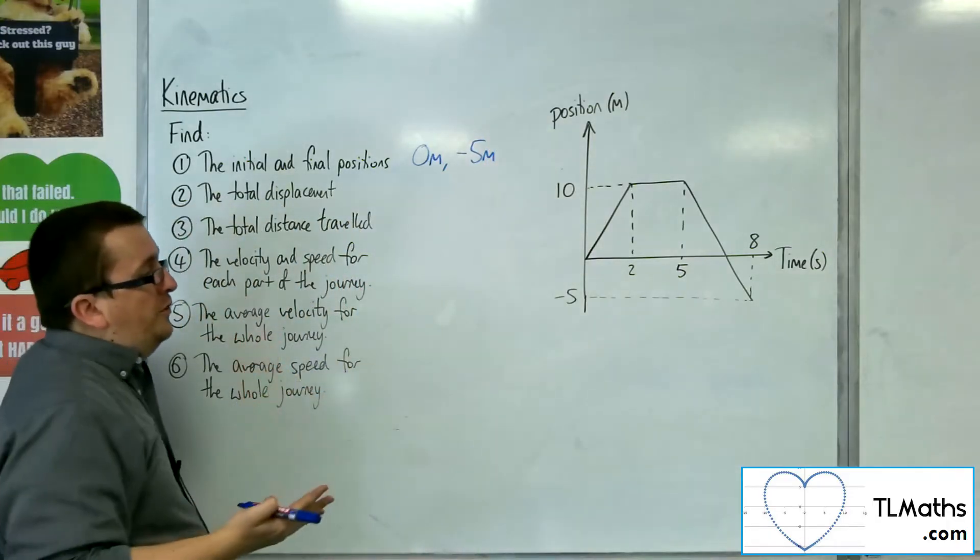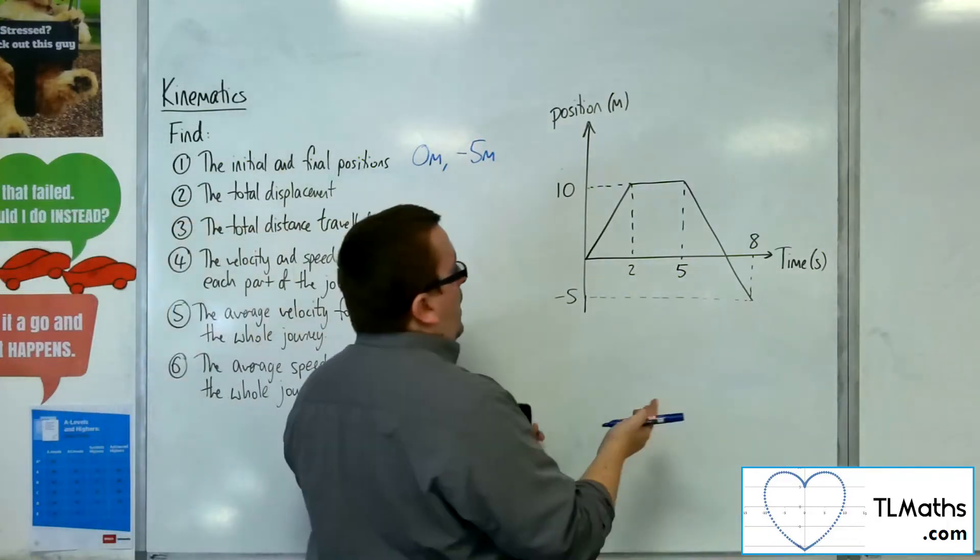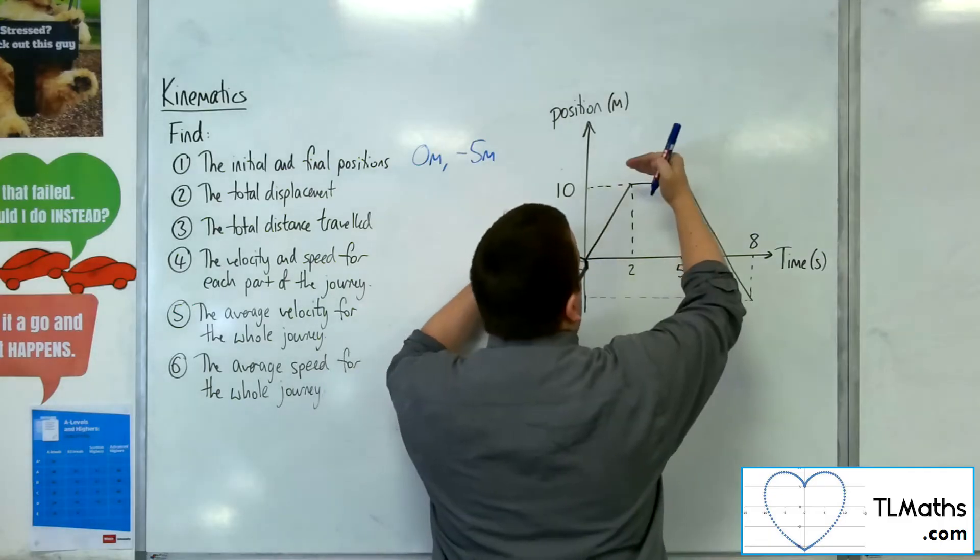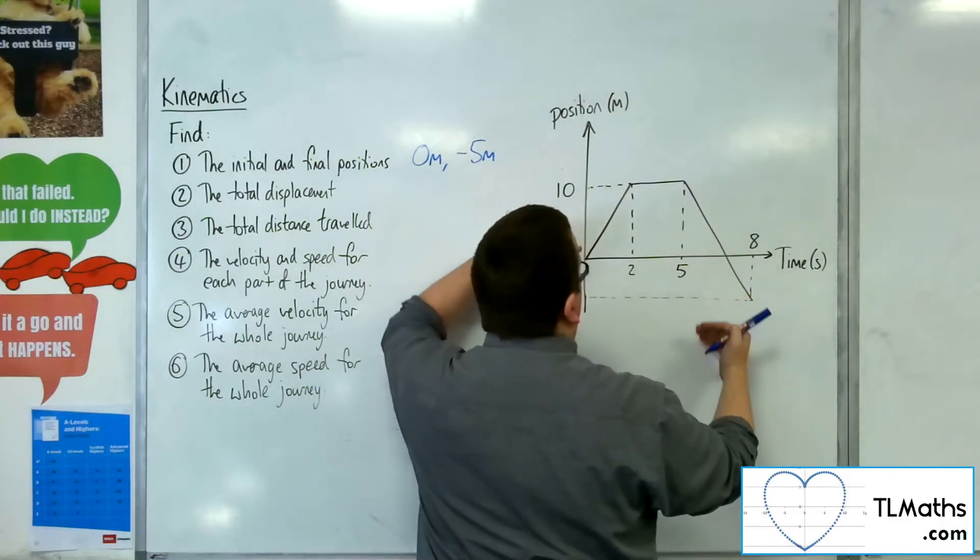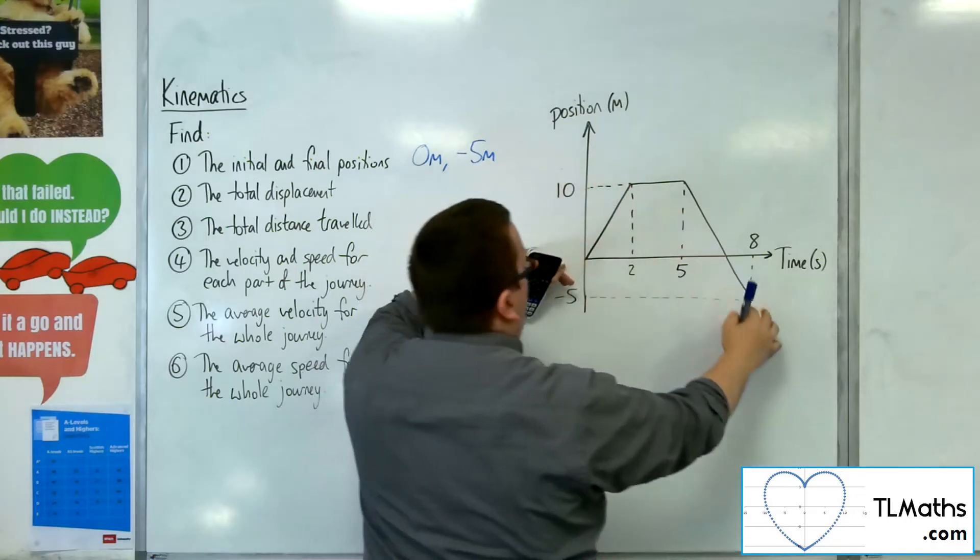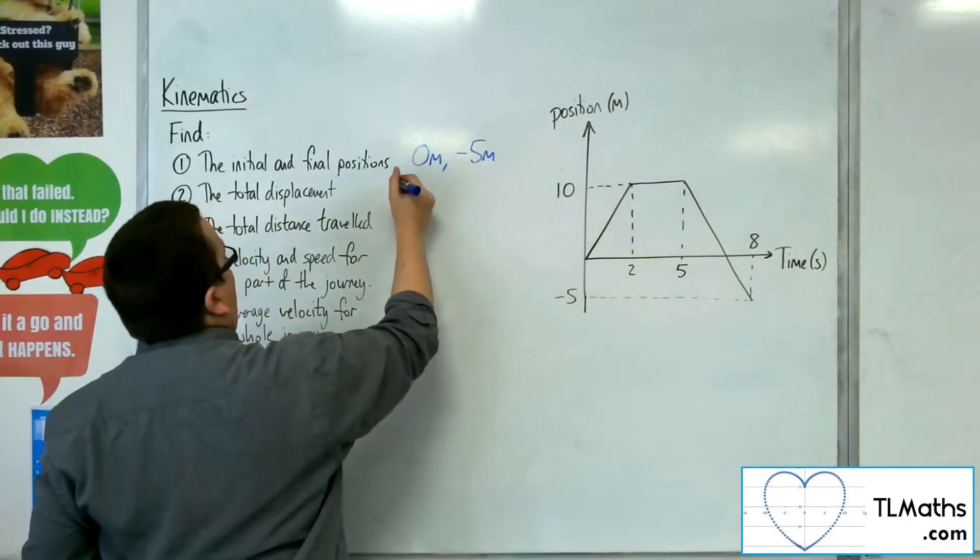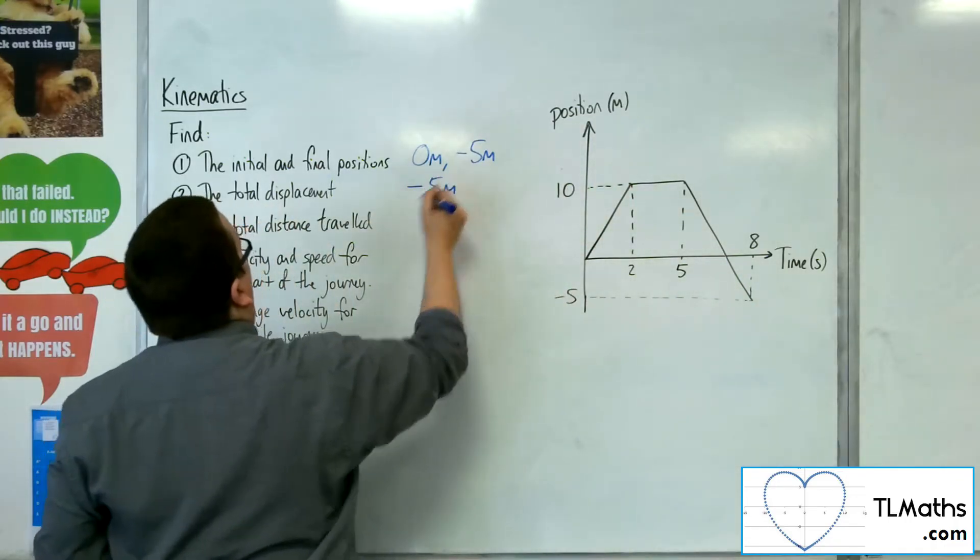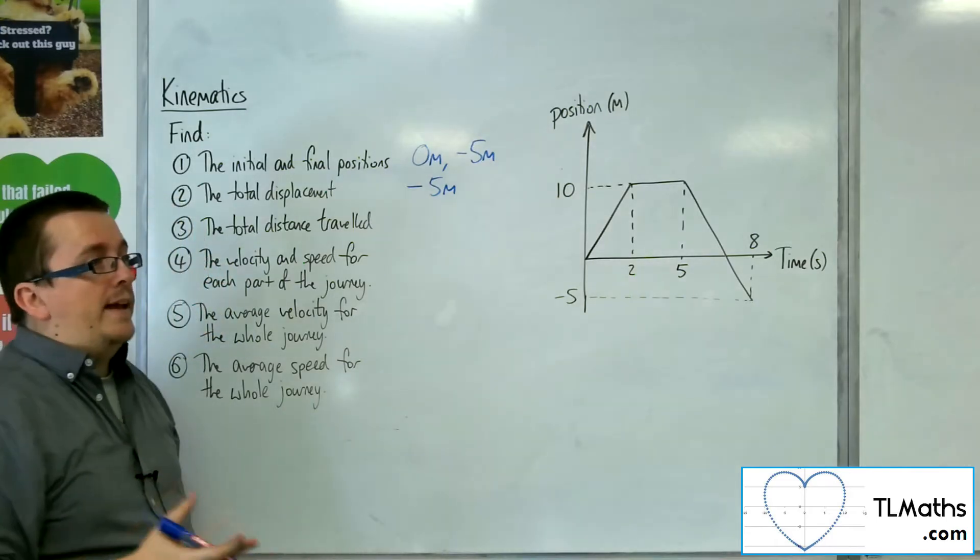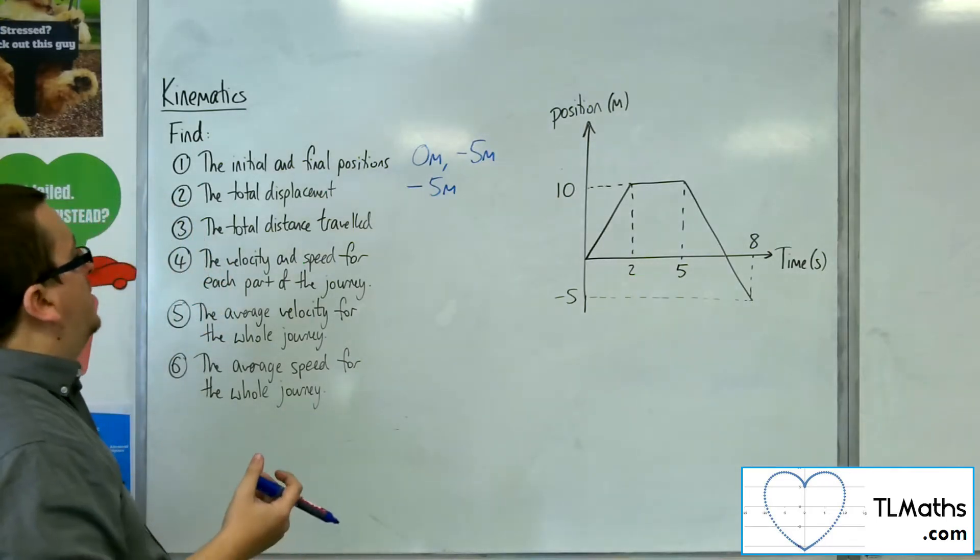The total displacement, well, as it's moved, it's got 10 metres this way, and then back 15 metres this way. So actually, the minus five metres that we got from the previous question is precisely the same as the total displacement. Five metres away from the original starting position.